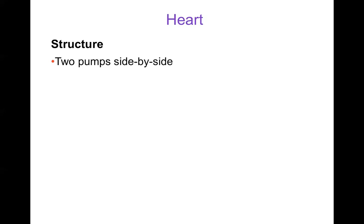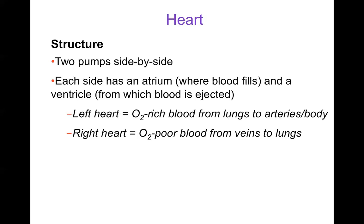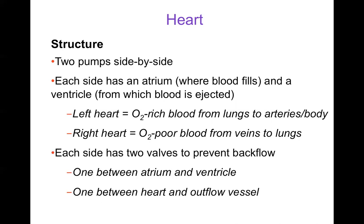To pump blood through the vessels we have the heart, which has the structure of two pumps side by side. Each side has an atrium where blood comes in and a ventricle where blood is ejected. The left heart takes oxygen-rich blood from the lungs and sends it out to the arteries and to the body — the left ventricle ejects flow into the aorta. The right heart takes oxygen-poor blood from the veins and pumps it out to the lungs to get oxygenated. Each side of the heart has valves to prevent backflow: a valve between the atrium and ventricle, and a valve between the heart and the outflow vessel on each side — so there are four valves in the heart.